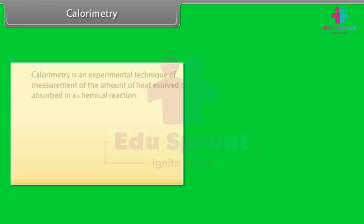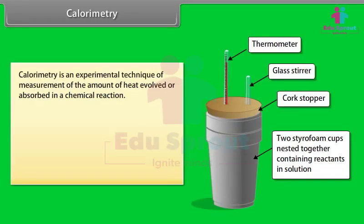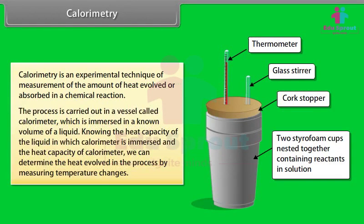Calorimetry is an experimental technique for measurement of the amount of heat evolved or absorbed in a chemical reaction. The process is carried out in a vessel called a calorimeter, which is immersed in a known volume of a liquid. Knowing the heat capacity of the liquid and the calorimeter, we can determine the heat evolved in the process by measuring temperature changes.